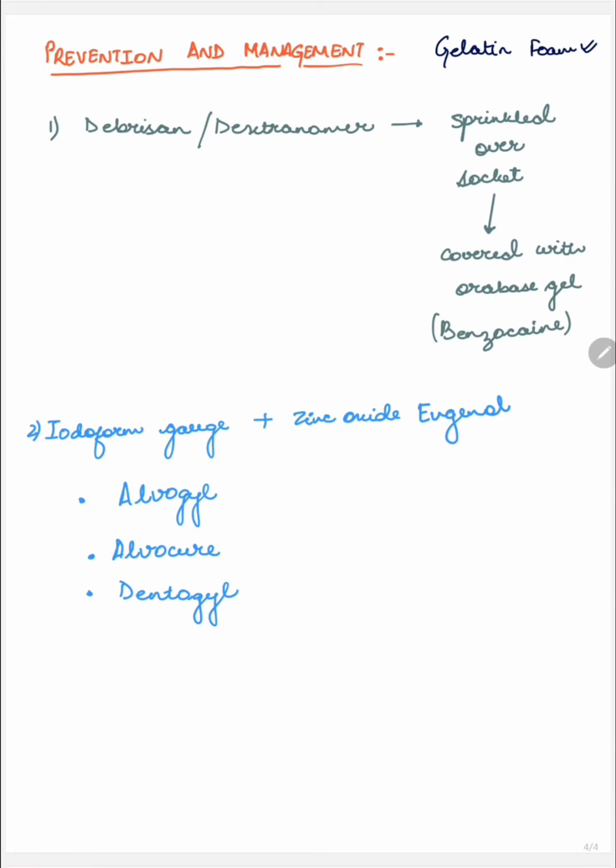Secondly, the socket should be compressed with the cotton roll for about one hour. Thirdly, the patient is instructed to not spit for about 24 hours and take cold diet. This will all help in preventing the complication, that is dry socket.